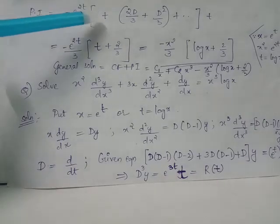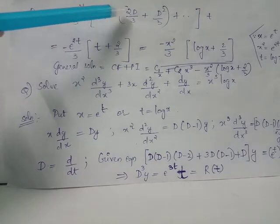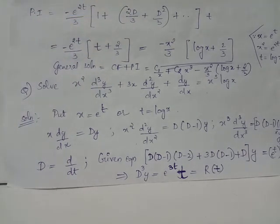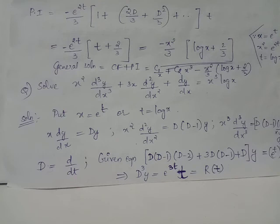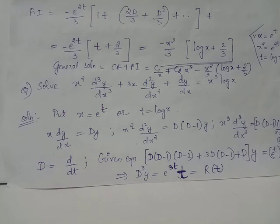Neglecting the higher powers of the operator, 1 multiplied by t gives t, and the 2D/3 term acting on t gives 2/3 since the derivative of t equals 1, and D squared of t becomes 0. Therefore, the PI for differential equation 2 is e raised to 2t over minus 3 multiplied by t plus 2/3. In order to find the particular integral for equation 1, we again use the transformation t equals log x, giving PI for equation 1 as negative x squared over 3 multiplied by log x plus 2/3.